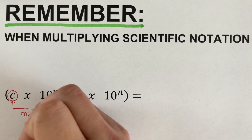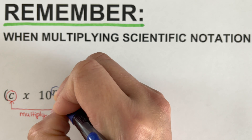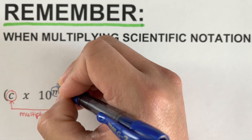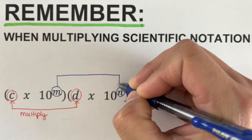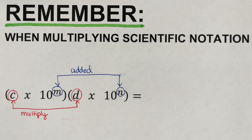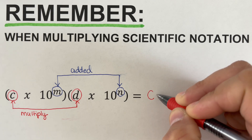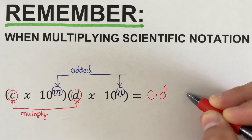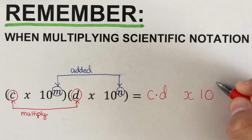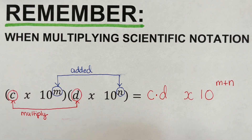The exponents m and n shall be added together. This means that the product of these two scientific notations comes out to be c times d, times 10 to the power m plus n. This is the general rule in multiplying scientific notation.